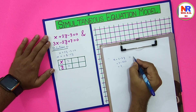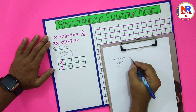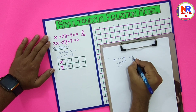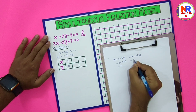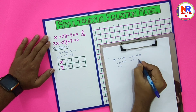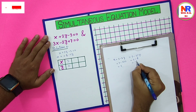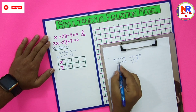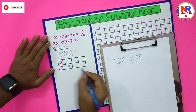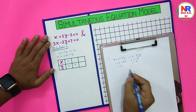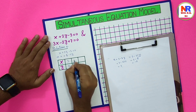Another value: suppose y equals 4. Then x equals 3 minus 2 into 4, that means 3 minus 8, which gives minus 5. So for y equals 4, we get x equals minus 5.